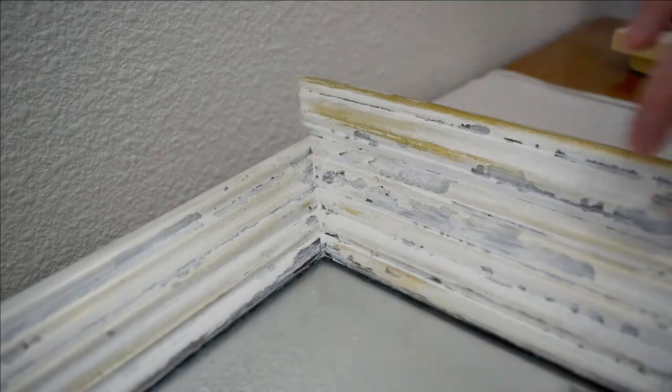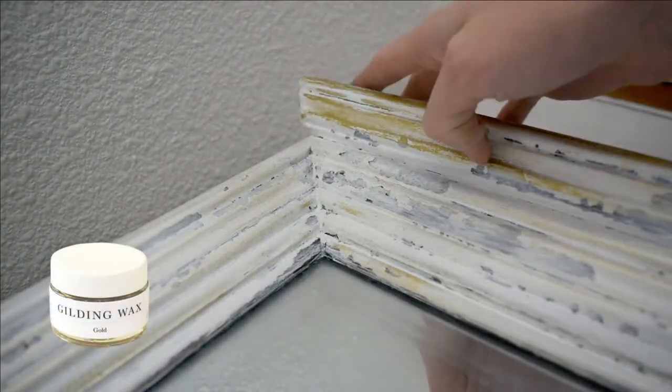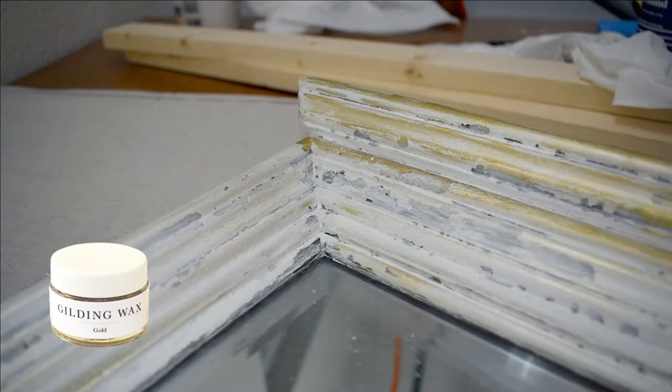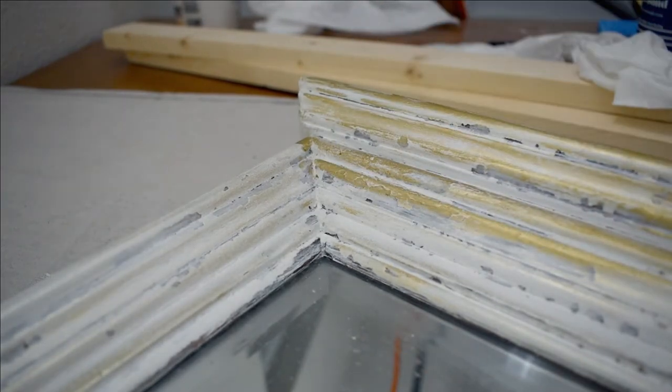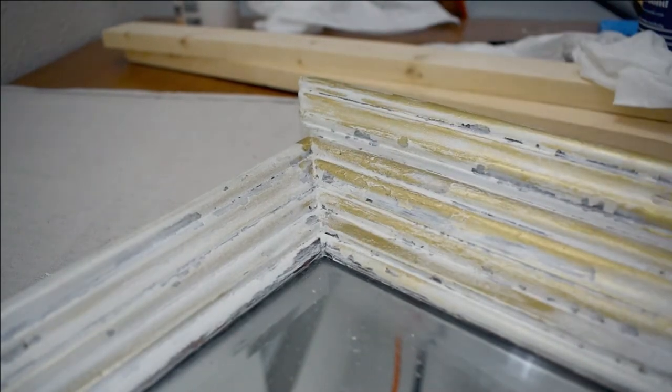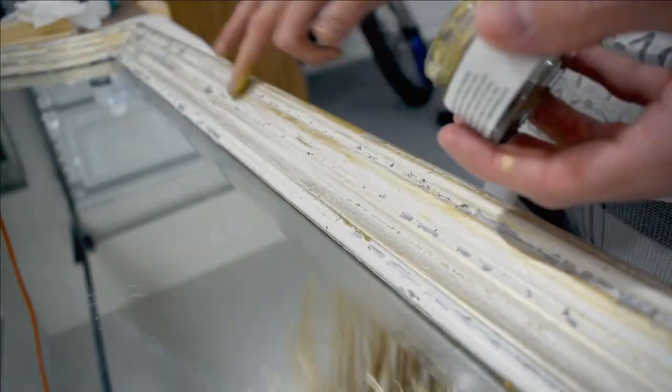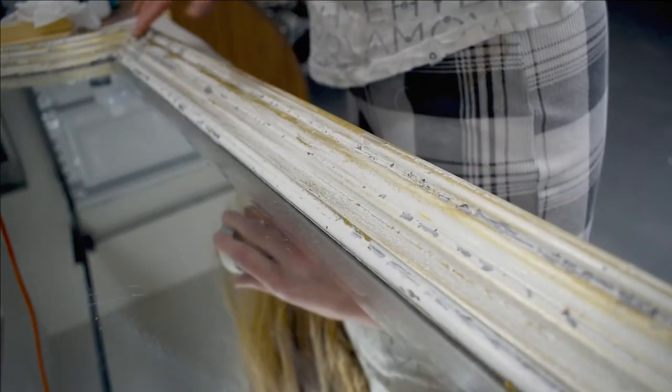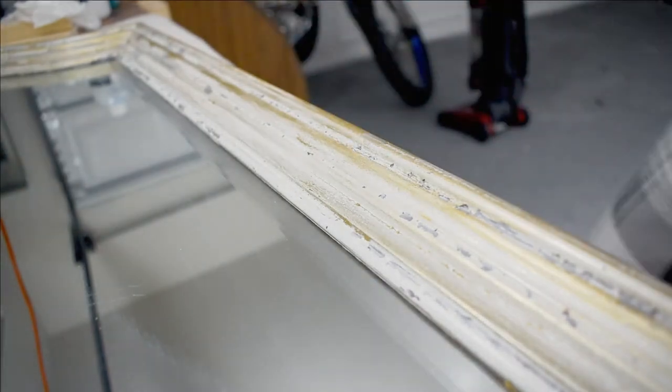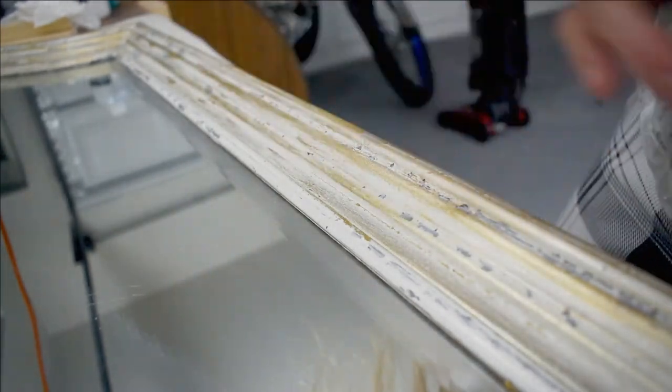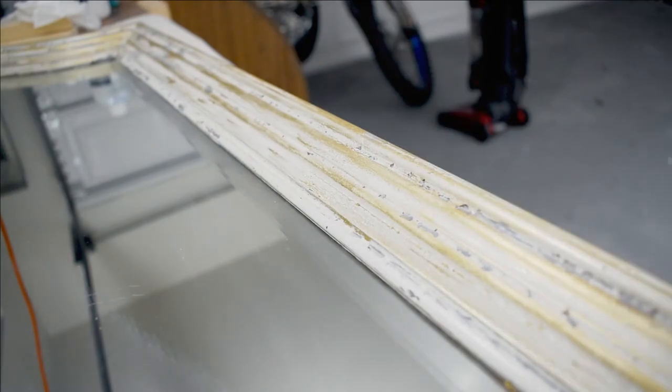After that, I move on to gilding wax, which is a highly pigmented metallic—in this case gold—wax that you apply with either a small brush or the tip of your finger. This wax is meant for ornamentation or hardware accents, but I ended up going all out with this, which I think is awesome.